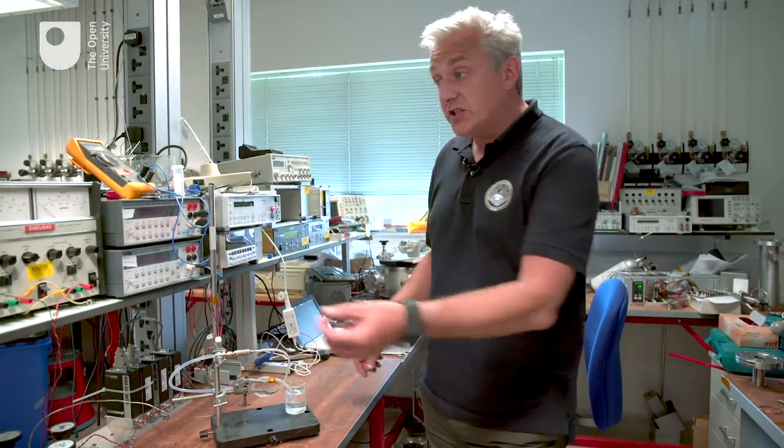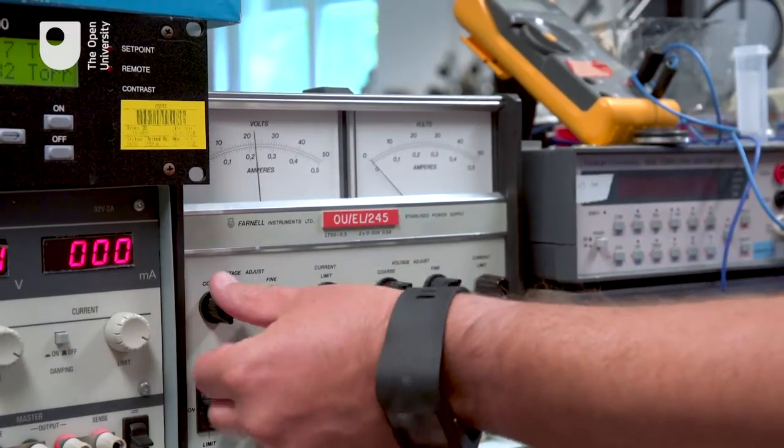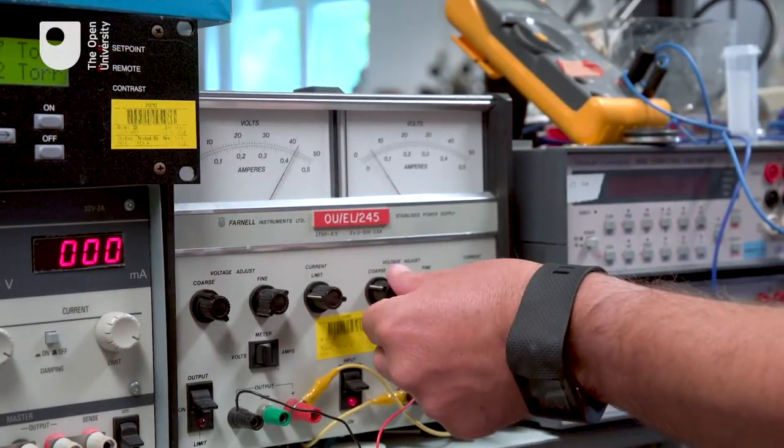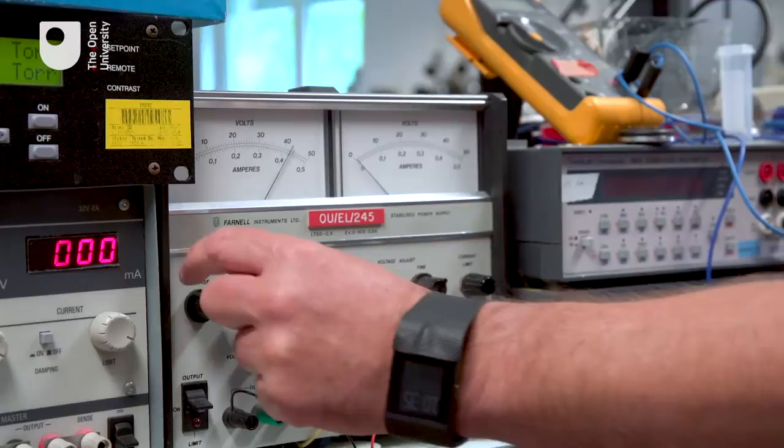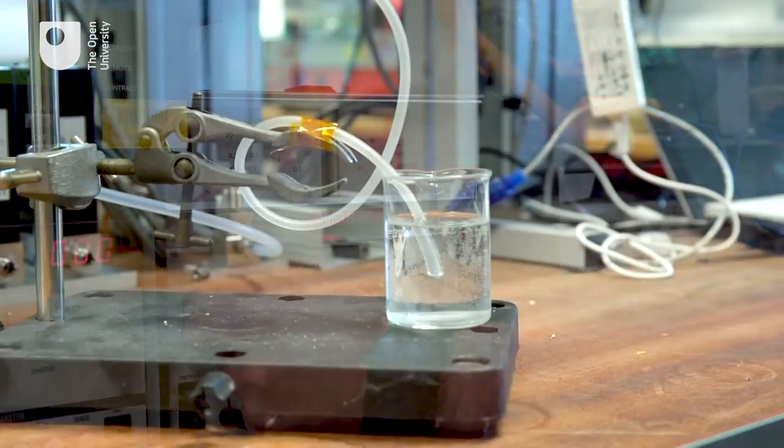By turning the voltage up on the actuator here, you should see the gas flowing through the valve and bubbles appearing in the water. And again, if you turn the voltage down, the bubbles stop.